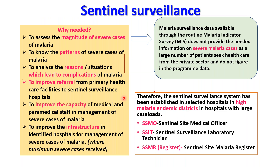Sentinel surveillance is needed in Category 1 areas to assess and understand the magnitude and patterns of severe malaria cases, analyze reasons leading to complications, improve referral mechanisms, improve the capacity of medical and paramedical staff in managing severe cases, and improve infrastructure for treatment of severe malaria. Sentinel surveillance has been established in selected hospitals in high malaria incidence areas, with designated sentinel site medical officers, surveillance laboratory technicians, and sentinel site managers.